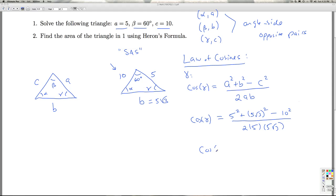So, I get cosine gamma is what? 5 squared is 25. This squared is 75. That's 25 plus 75. That's 100 minus 100. That's 0 over 50 radical 3, which is 0. That means that gamma has got to be, our good friend, 90 degrees.